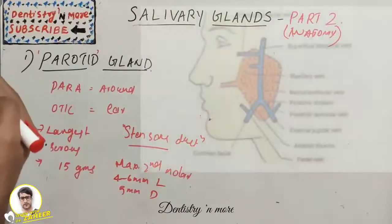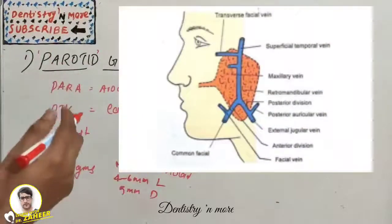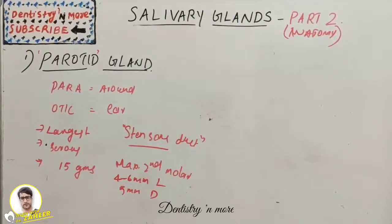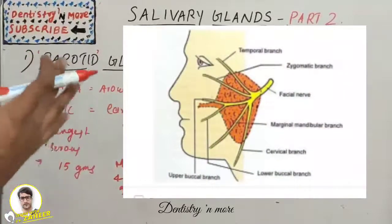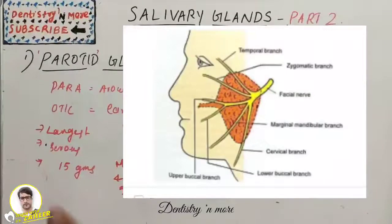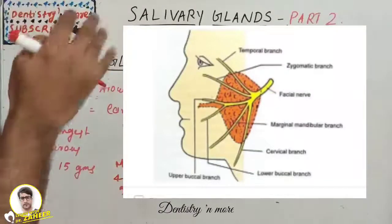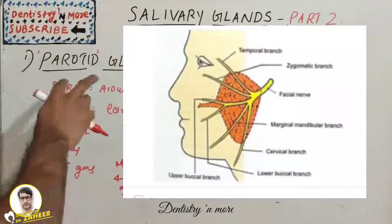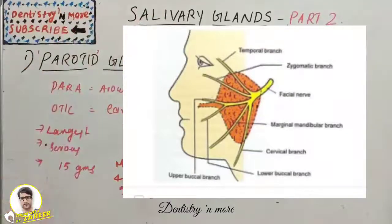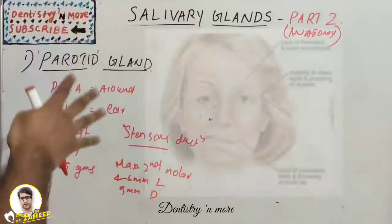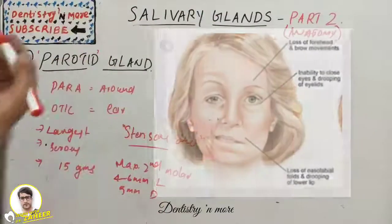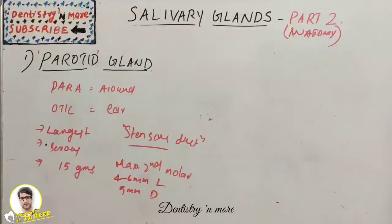The retromandibular vein is formed within the gland by the union of the superficial temporal and maxillary veins. The facial nerve enters the gland and divides into terminal branches within it. This is why, during an inferior alveolar nerve block, if the solution is accidentally injected into the parotid gland before touching the bone, there will be temporary facial paralysis on that side.